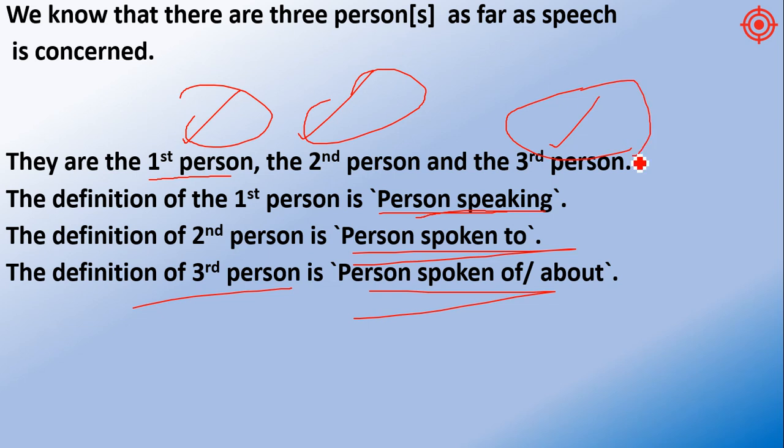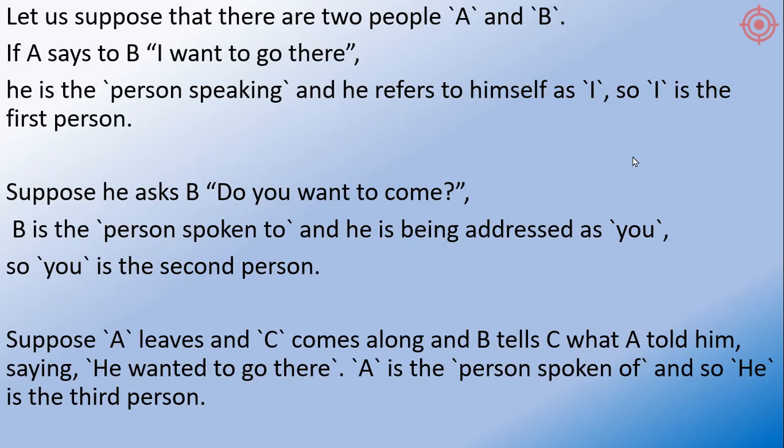These are the basic terminologies of indirect and direct speech. Now let's take an example. Suppose there are three persons: A, B, C. If A says to B, 'I want to go there,' he is the person speaking and he refers to himself as 'I', so 'I' is the first person.